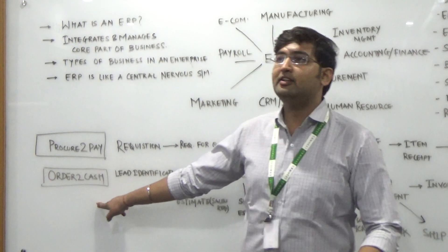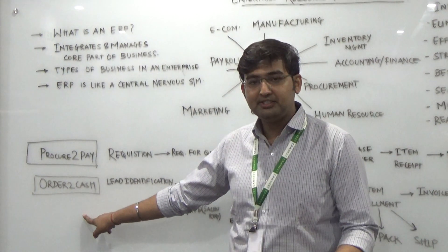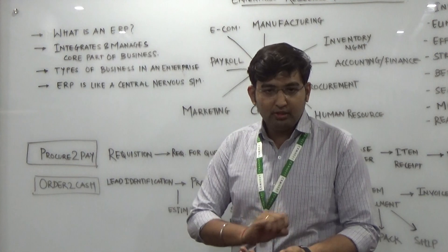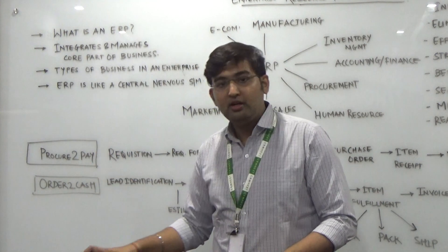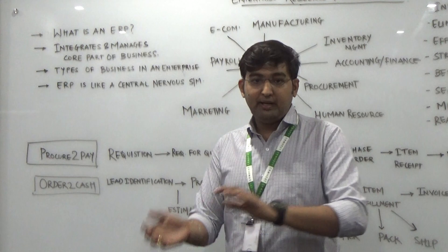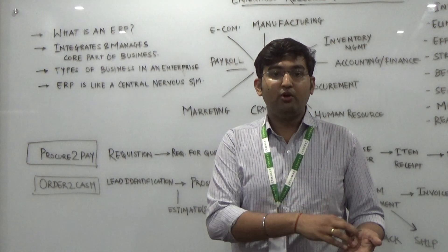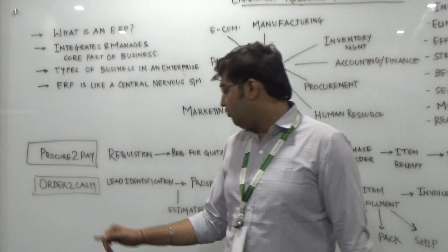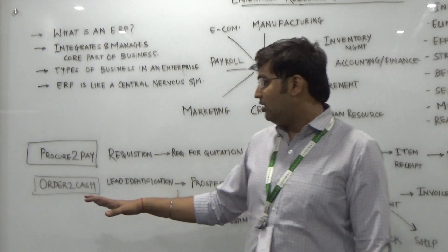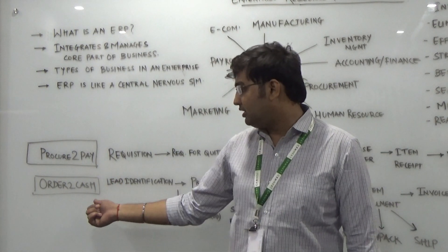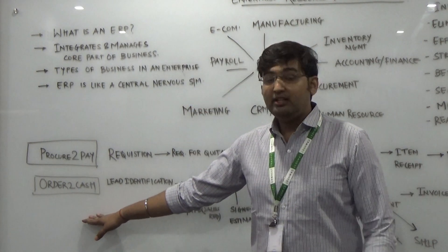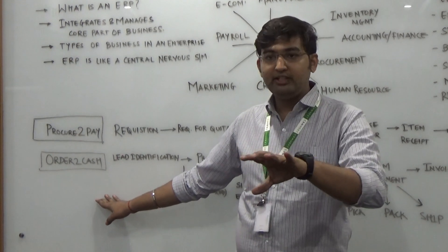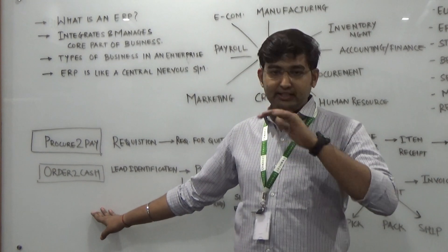Second is order to cash. In the legacy system, people come in, write down what medicine they want, and after the medicine is sold, they maintain a separate register — XYZ has been decreased by quantity 3 or 5. Everything is manual from A to B. In an ERP system, there is no process of lead identification in the legacy system; someone comes in and only then can we convert that lead into a customer.